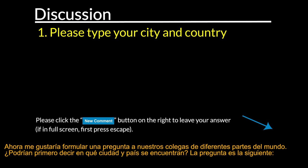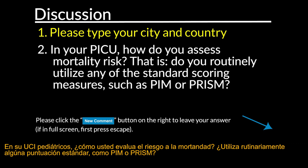I wonder if I could turn now to our colleagues around the world and ask a question. Could you please state your city and country location? The question is: in your pediatric intensive care unit, how do you assess mortality risk? Do you routinely utilize any of the standard scoring measures such as PIM or PRISM?